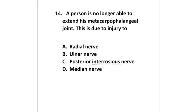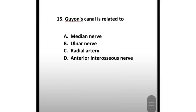A person is no longer able to extend his metacarpophalangeal joint. This is due to injury to which nerve — radial nerve, ulnar nerve, posterior interosseous nerve, or median nerve? The answer is option C: posterior interosseous nerve.